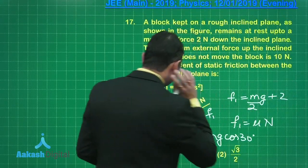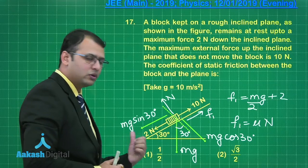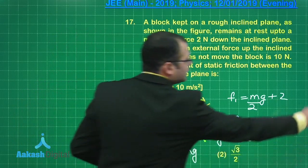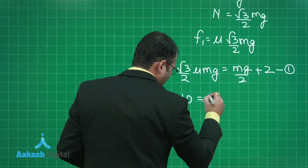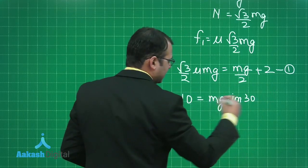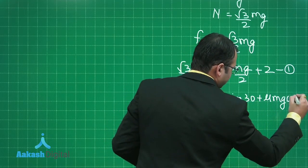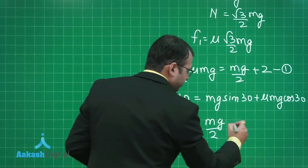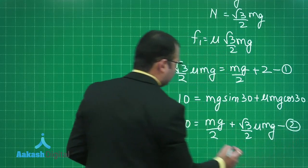Now let's consider this force of 10 Newton. When this force is acting upwards, the friction will go down. In that case, 10 should be equal to mg sin 30 downwards and the friction force which is acting downwards, μ mg cos 30. Solving this you will get 10 equals mg by 2 plus root 3 by 2 μ mg. This is equation 2.